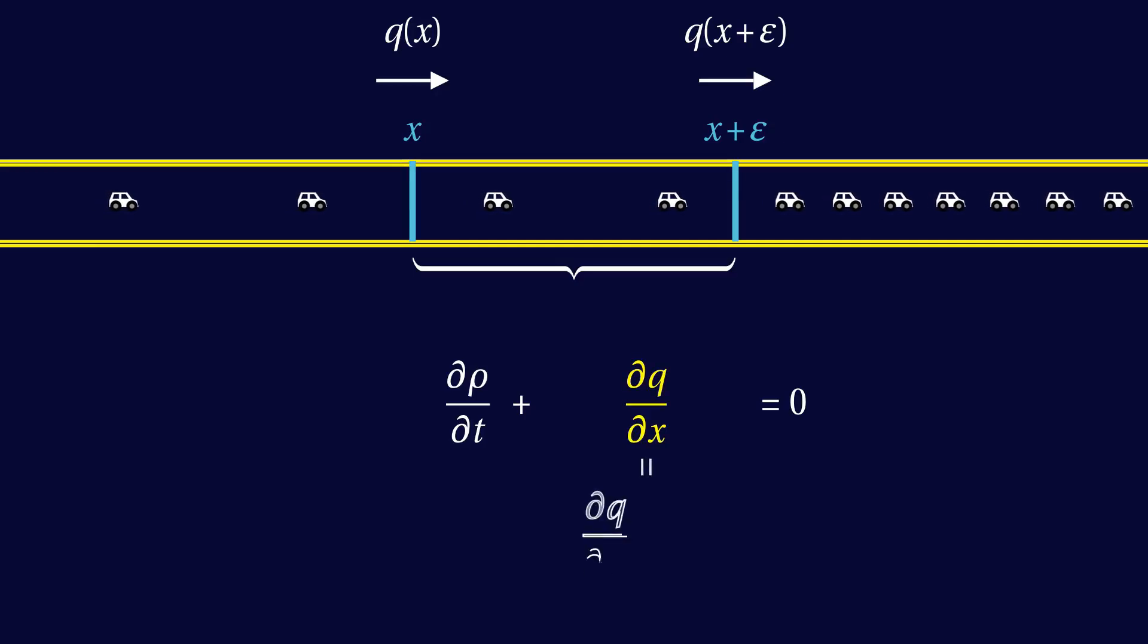With the chain rule, that turns into this equation, relating the time derivative of rho to its space derivative. In our model, where q is rho minus rho squared, the factor dq/drho is equal to 1 minus 2 rho.